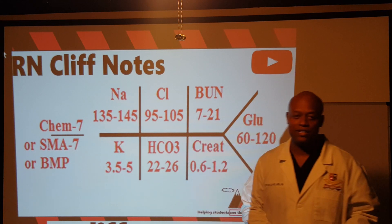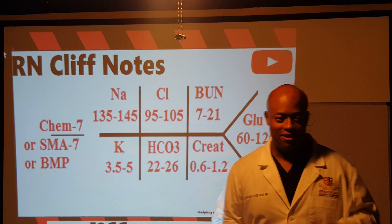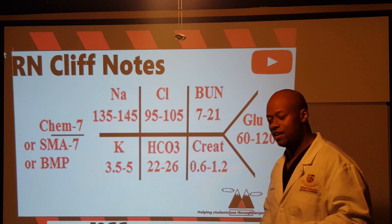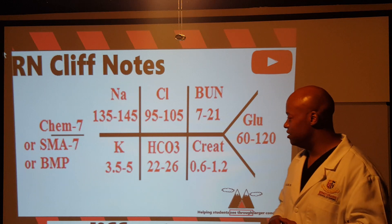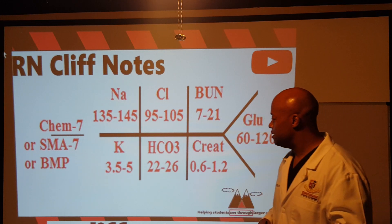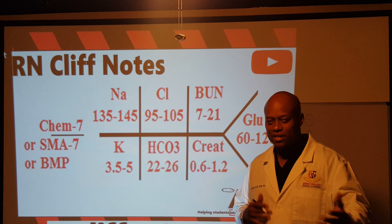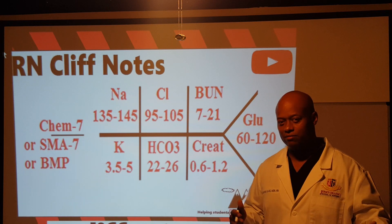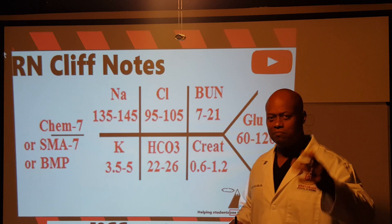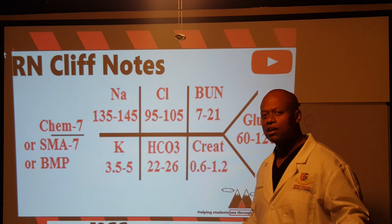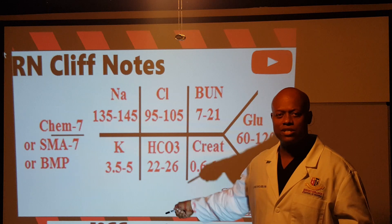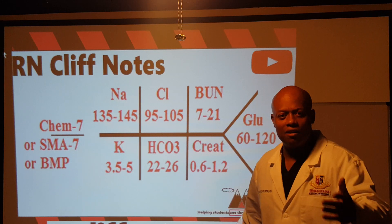HCO3 — don't be thrown by that. It's bicarb, short for bicarbonate. Doesn't 'bicarb' sound like 'buying a car'? And people are about age 22 to 26 when they buy a car — so the range for bicarb is 22 to 26. Study smart, not just hard.